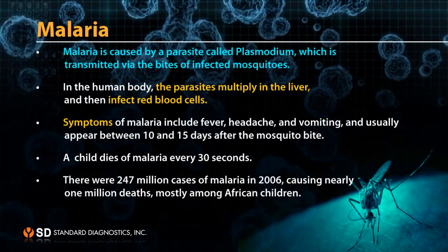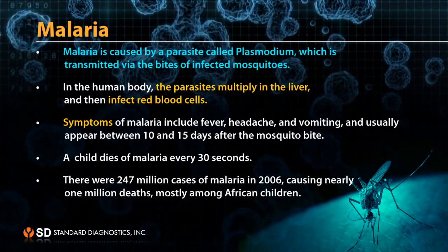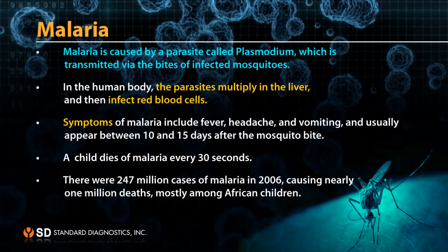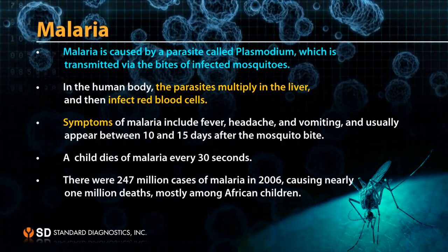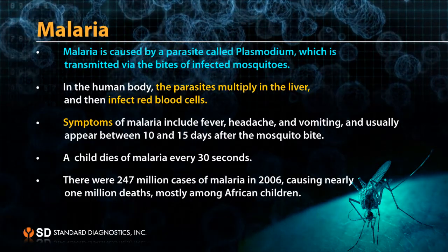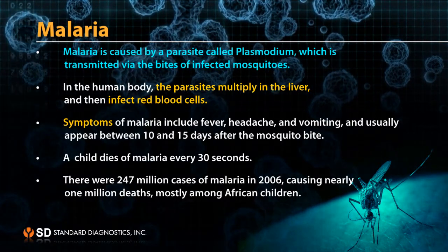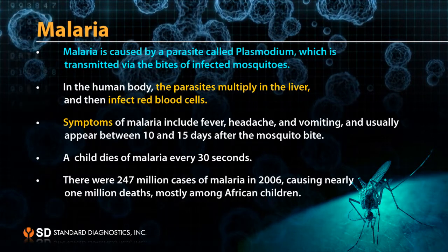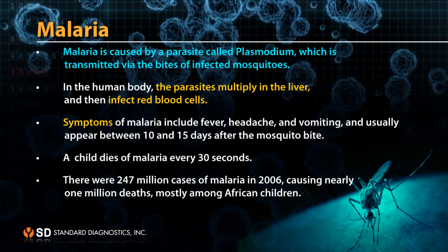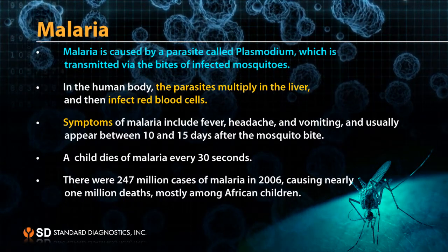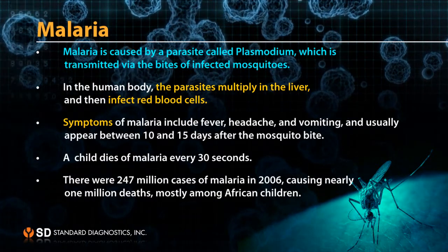Malaria is caused by a parasite called Plasmodium, which is transmitted via the bites of infected mosquitoes. In the human body, the parasites multiply in the liver and then infect red blood cells. Symptoms include fever, headache, and vomiting, usually appearing between 10 and 15 days after the mosquito bite. A child dies of malaria every 30 seconds, and there were 247 million cases in 2006 causing nearly 1 million deaths, mostly among African children.